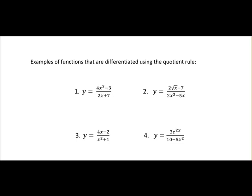So in the first example, you have 4x³ minus 3, that's one function on top, over 2x plus 7, another function. So when you have one function over another, you apply the quotient rule.